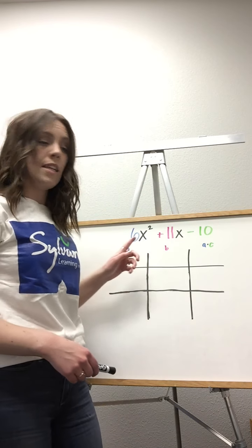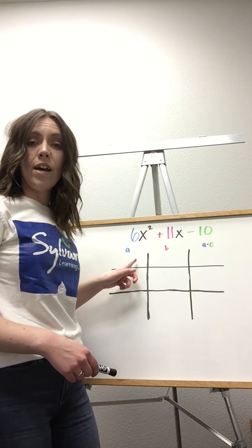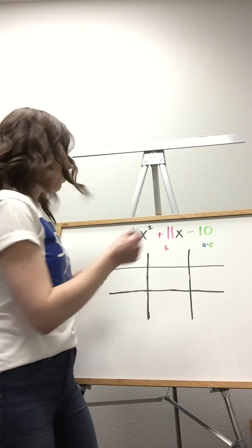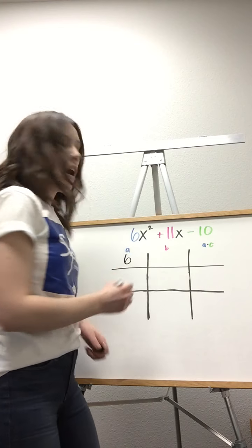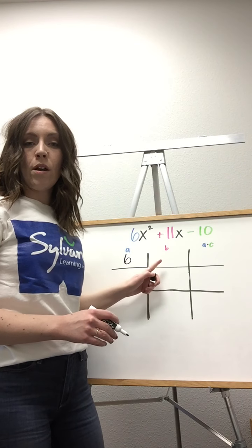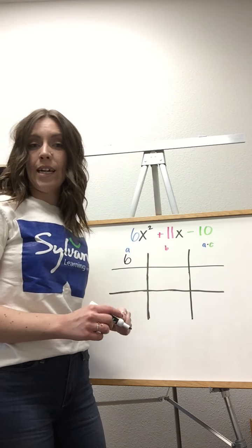In the first space here, we're going to put our a value, or the number that's right next to the x squared. Our second column will put our b value, or the number right next to the x.